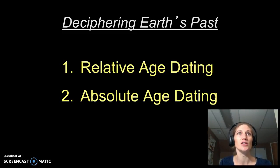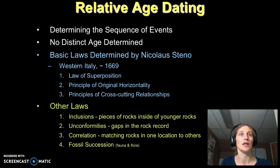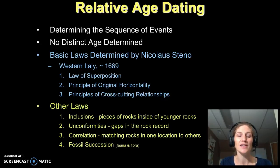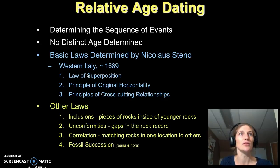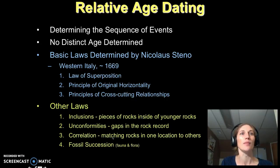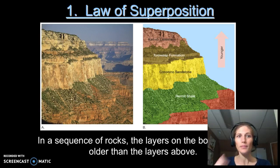When we go and try to decipher the earth's past, we use two basic techniques: relative age dating and absolute age dating. Today we're going to focus on relative age dating, which tells us the sequence in which events happened — it does not give us a specific age date. There are three basic laws figured out by Nicolas Steno in western Italy in the mid-1600s: the law of superposition, original horizontality, and cross-cutting relationships.